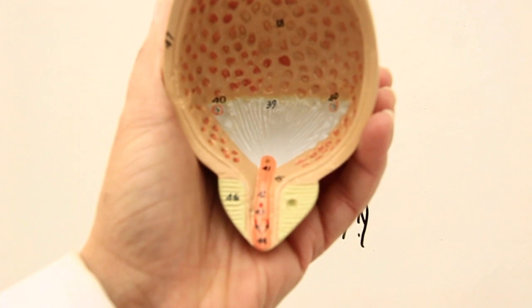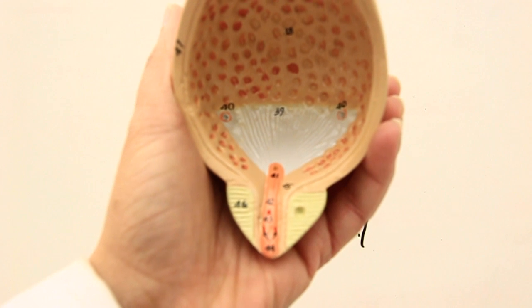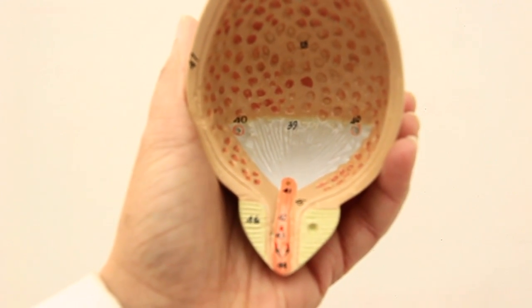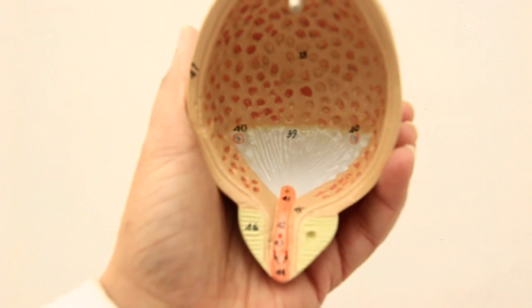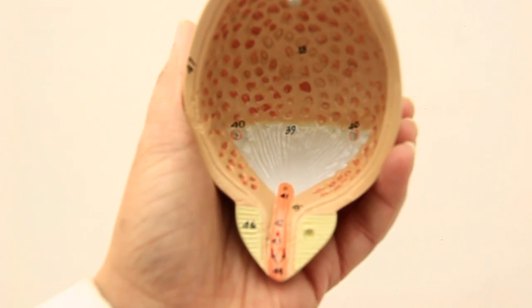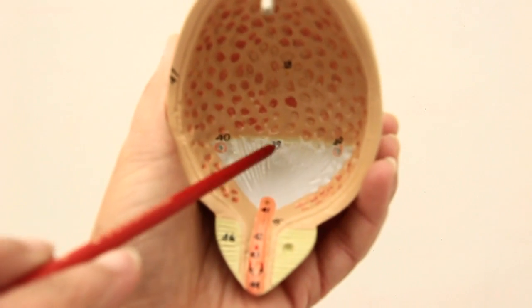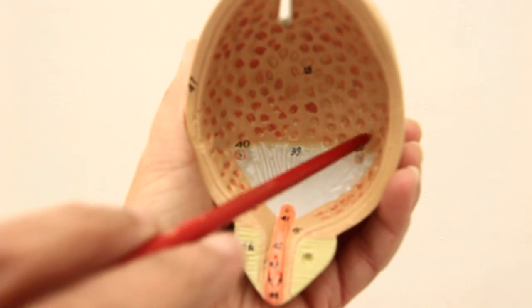In this video I will be talking about the internal structure of the urinary bladder, how it looks when you remove its anterior wall and you're looking at the posterior wall of the bladder.